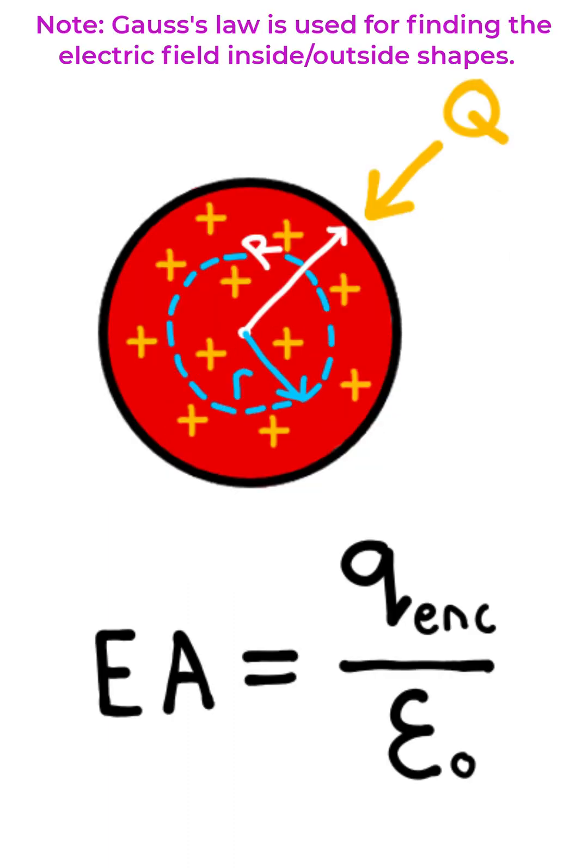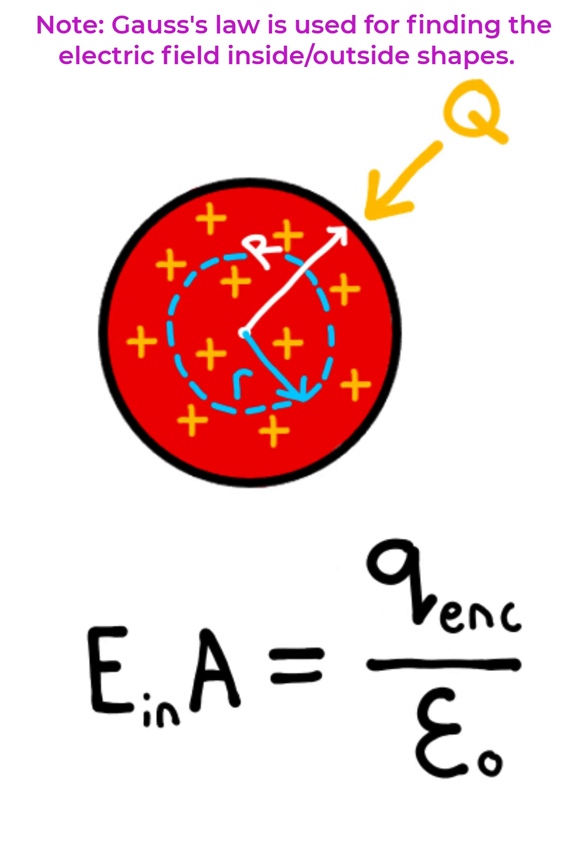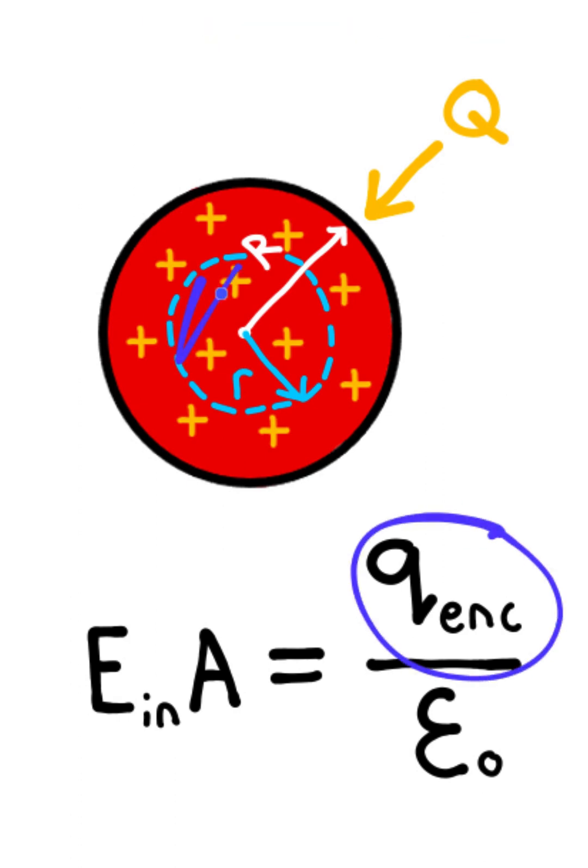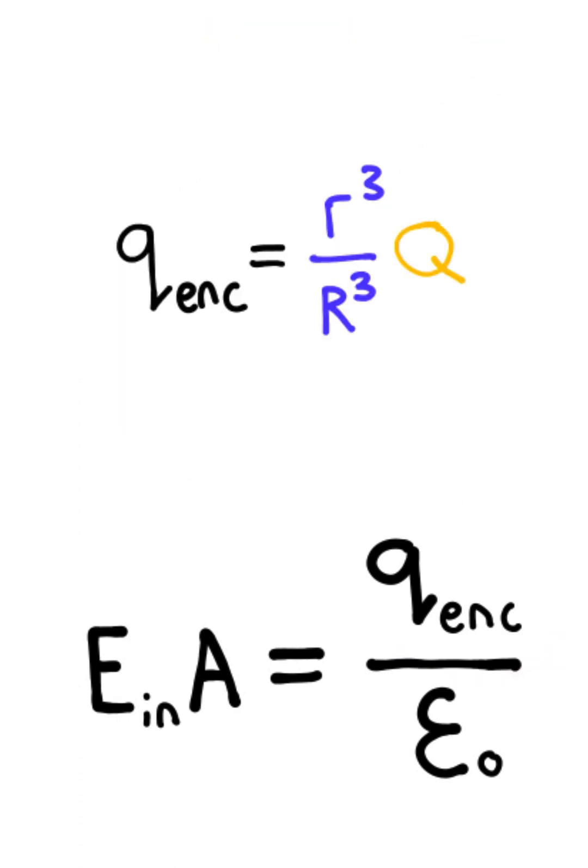To solve this problem, we're going to use Gauss's law, and the electric field that we're looking for is the electric field inside the sphere. When dealing with spherical insulators, the charge enclosed by the imaginary sphere on the inside is a ratio of the two radii cubed multiplied by the total charge. You can take this relationship and plug it in for the enclosed charge.